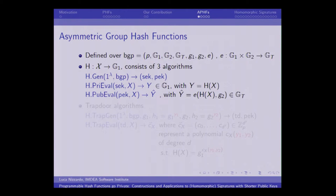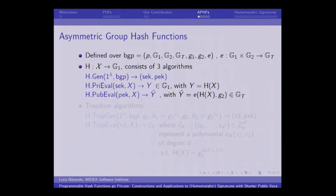Let me introduce this new tool, the asymmetric group hash function. They are defined over bilinear groups, with a map from G1 times G2 to GT. An asymmetric group hash function consists of three algorithms: a key generation algorithm which, given a security parameter and a bilinear group description, outputs a secret key and public key; a private evaluation algorithm which, given an input and a secret key, gives an output that cannot be computed with just the public key; and a public evaluation algorithm which allows anyone with the public key to compute a homomorphic copy of the output in the target group GT.